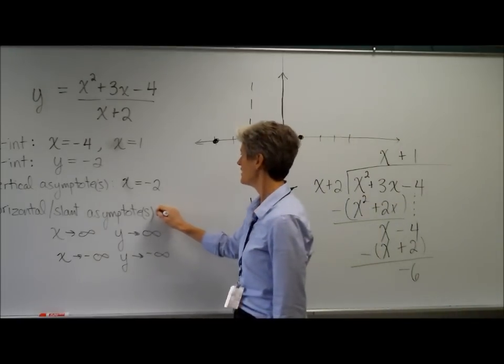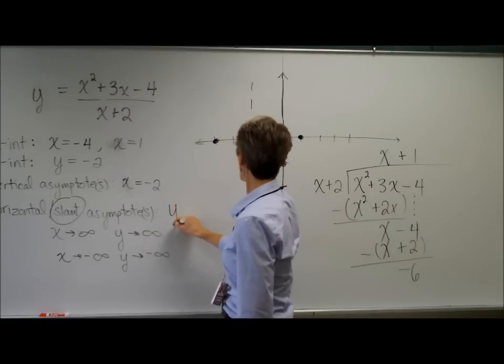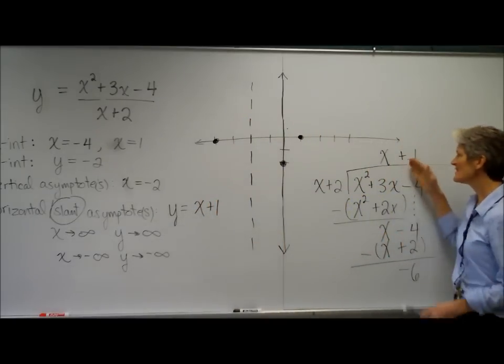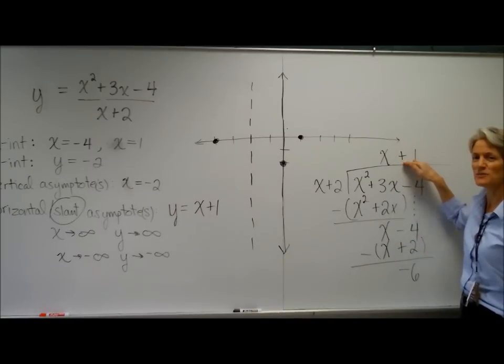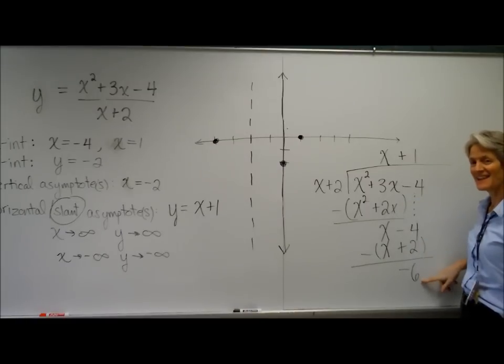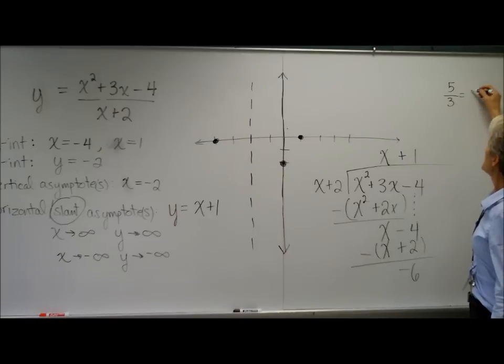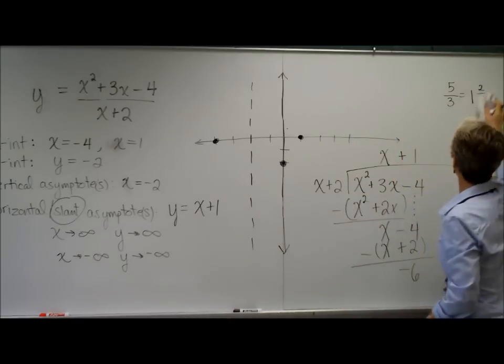Okay. So my slant asymptote is going to be y equals x plus 1. And I kind of like this because what this means is this function basically is going to look like the line x plus 1 when my x's are big or really, really negative. It's not going to be exactly a line because there's a remainder. Gotcha. It's kind of like when you have 5 divided by 3. Well, that's 1 and a little bit. It's about 1, right? That's actually closer to 2, but you know where I'm going. I know where you're going.